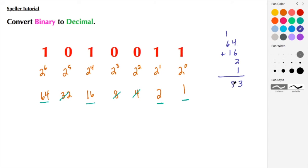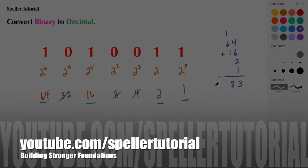And 1 and 1 is 8. So we see that this binary number represented as decimal is just 83. That sums up this tutorial by Spiller Tutorial. If you found this tutorial to be useful, please like, share, and subscribe. And as always, have a great day.